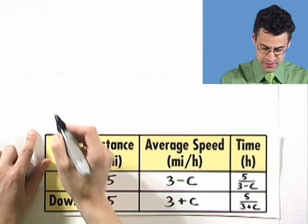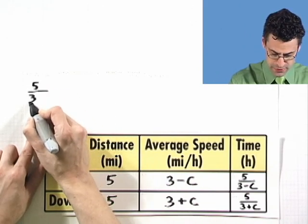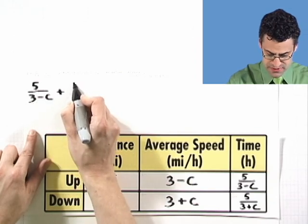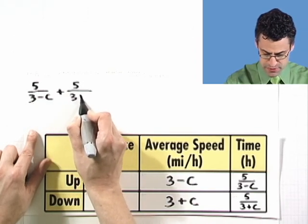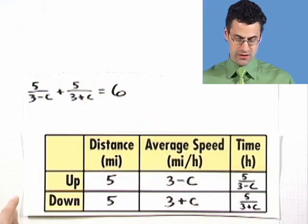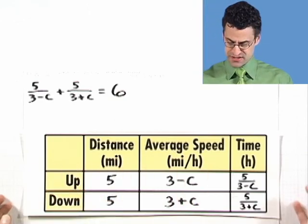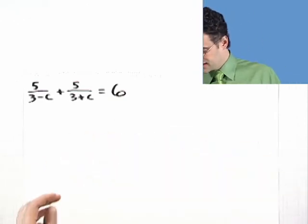We produced an equation where we can solve for C. Remember, C is the speed of the current. So we've got five over three minus C plus five over three plus C equals six. And notice that is an equation, and we can solve it for C. And that all came out of thinking about this and parsing what we know. So, let's put this together and see what happens.